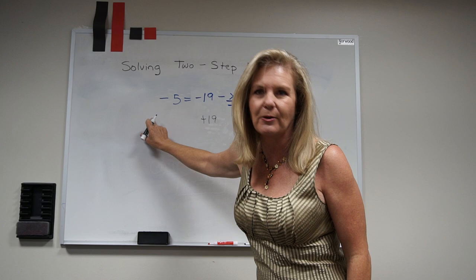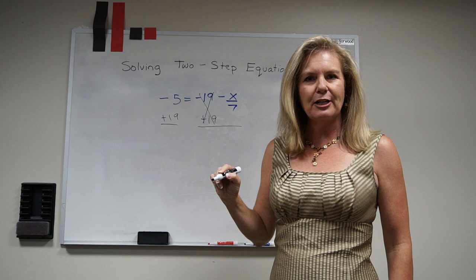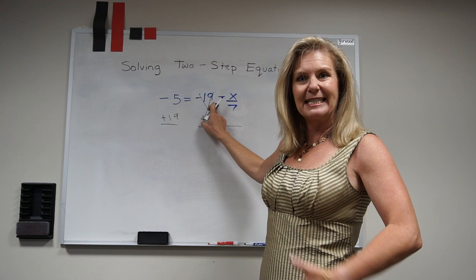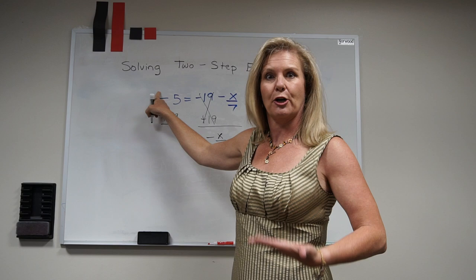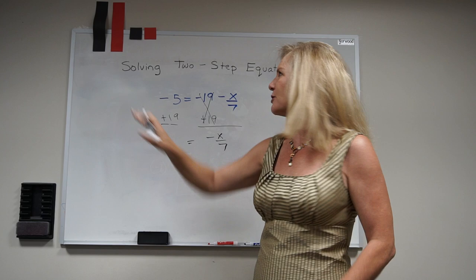We know that when we use inverse operations, those inverse operations cancel each other out. So that negative 19 disappears, but what's still left on this side of the equation is negative x divided by 7. Now on the other side of the equal sign, I have negative 5, which are my reds, and I have positive 19. So I know that those reds and blacks are going to cancel each other out, so negative 5 plus 19 is a positive 14.